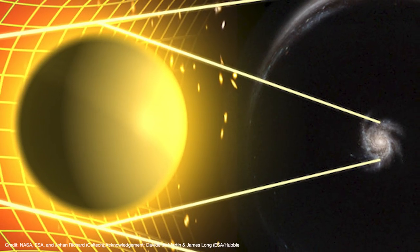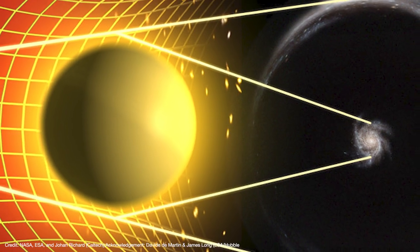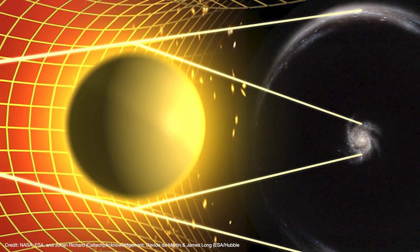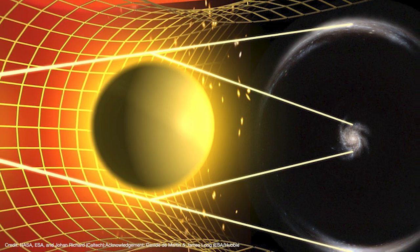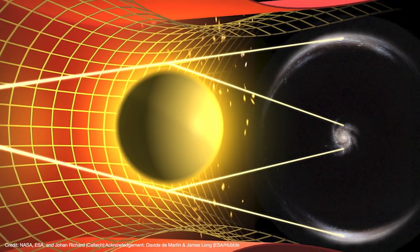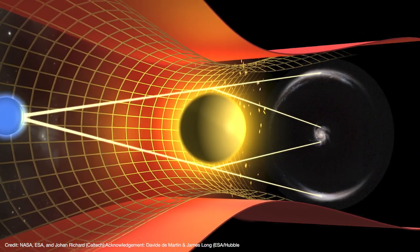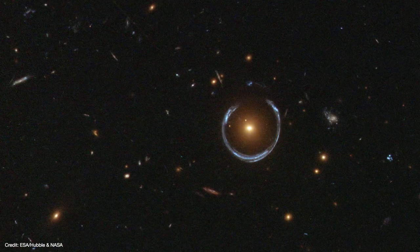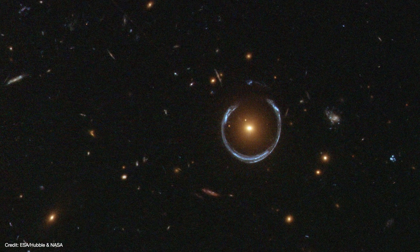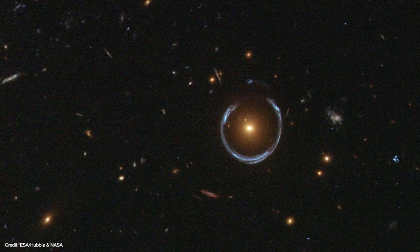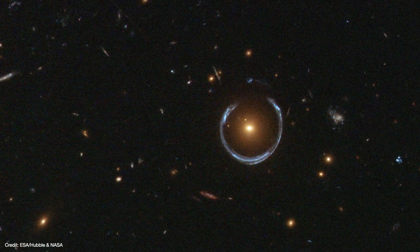Now, if the lensing mass and the background object are both concentrated and the background object lies directly behind the lensing mass, then the light from the background object will get distorted into a perfect ring of light called an Einstein ring. We sometimes see Einstein rings in nature when a background galaxy lies almost directly behind a massive, compact foreground galaxy.